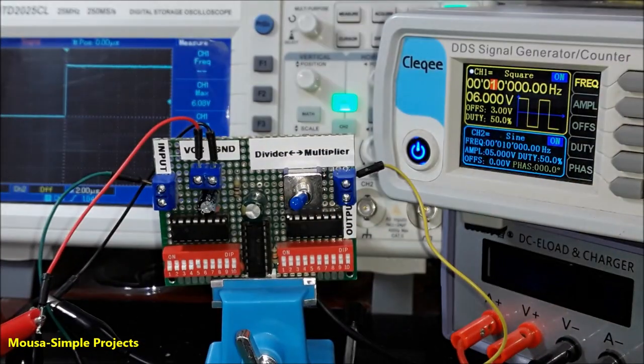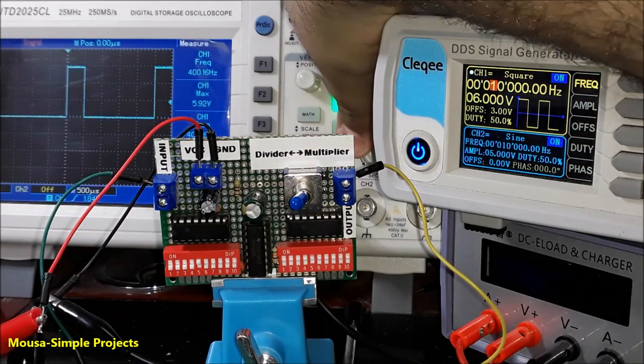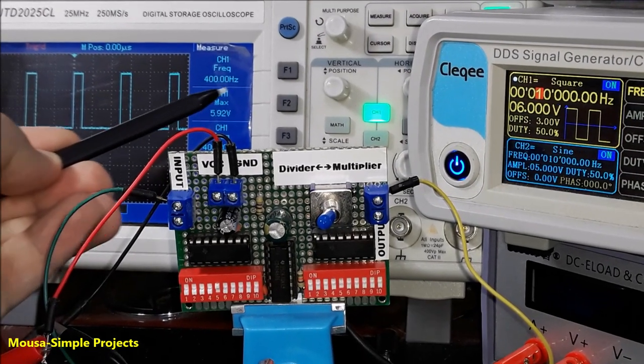But by selecting a frequency divider, the output frequency will be 25 times less than the input.